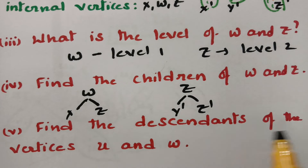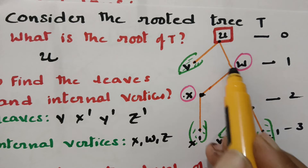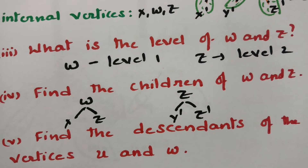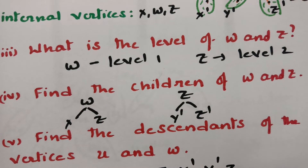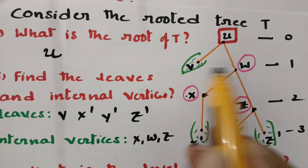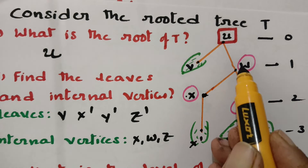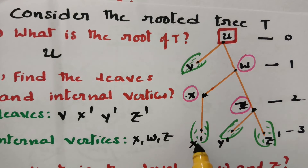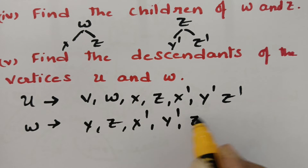Now finding the descendants of U and W. For U, the descendants are all vertices below it: V, W, X, Z, X-dash, Y-dash, and Z-dash. For W, the descendants are X, Z, X-dash, Y-dash, and Z-dash. These are all the descendants of W from the graph.